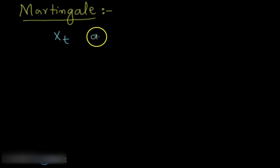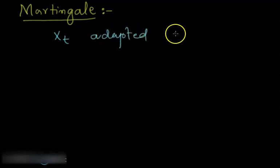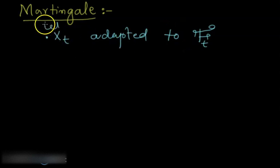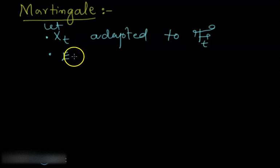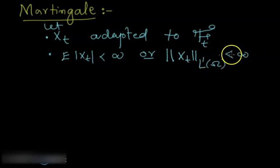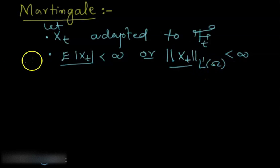Consider X(t) adapted to filtration F_t. We have a process that is adapted to a filtration. So X(t) is adapted to this, and its expectation — the expectation of the absolute value of this process — is finite. Or you can say that the L1 norm of X(t) in L1(Ω) is finite, because the expectation of X(t) is the same as the L1 norm of X(t) in L1(Ω). So you have these two assumptions satisfied by your process.